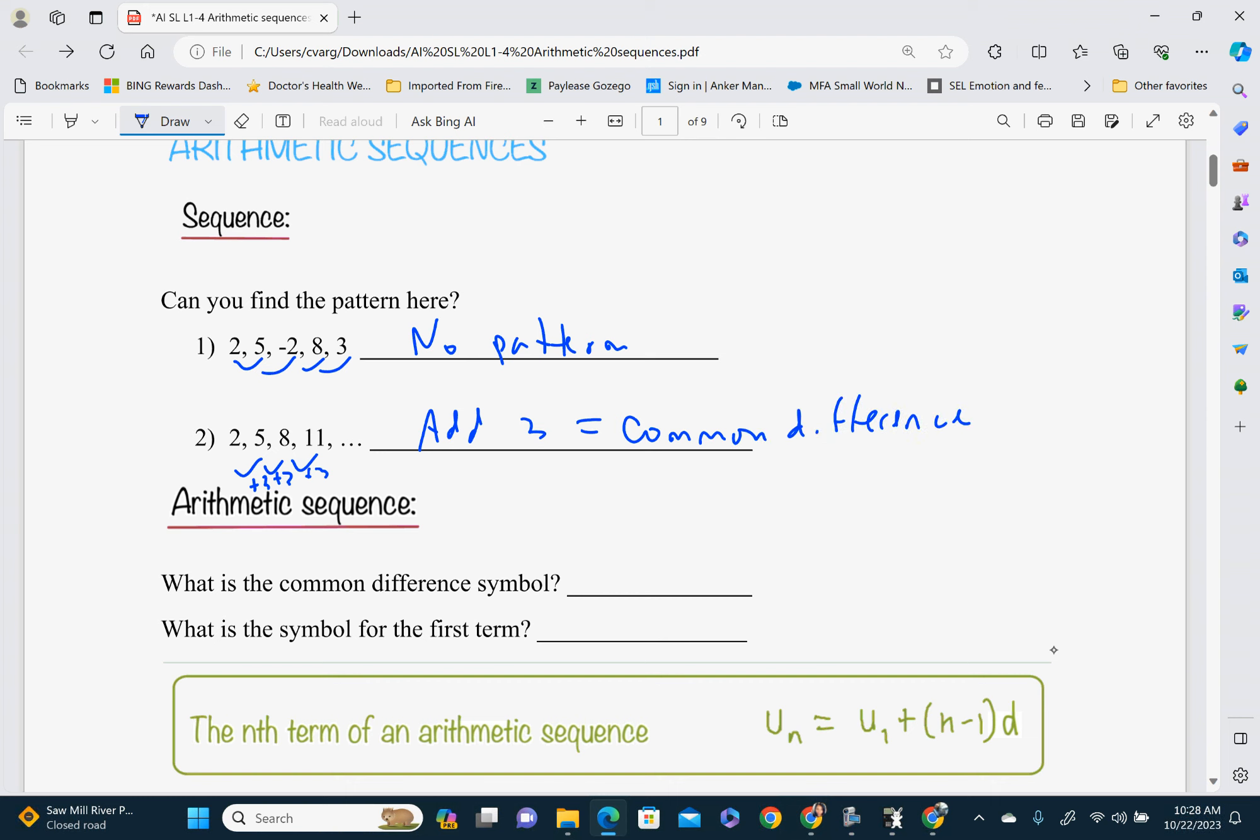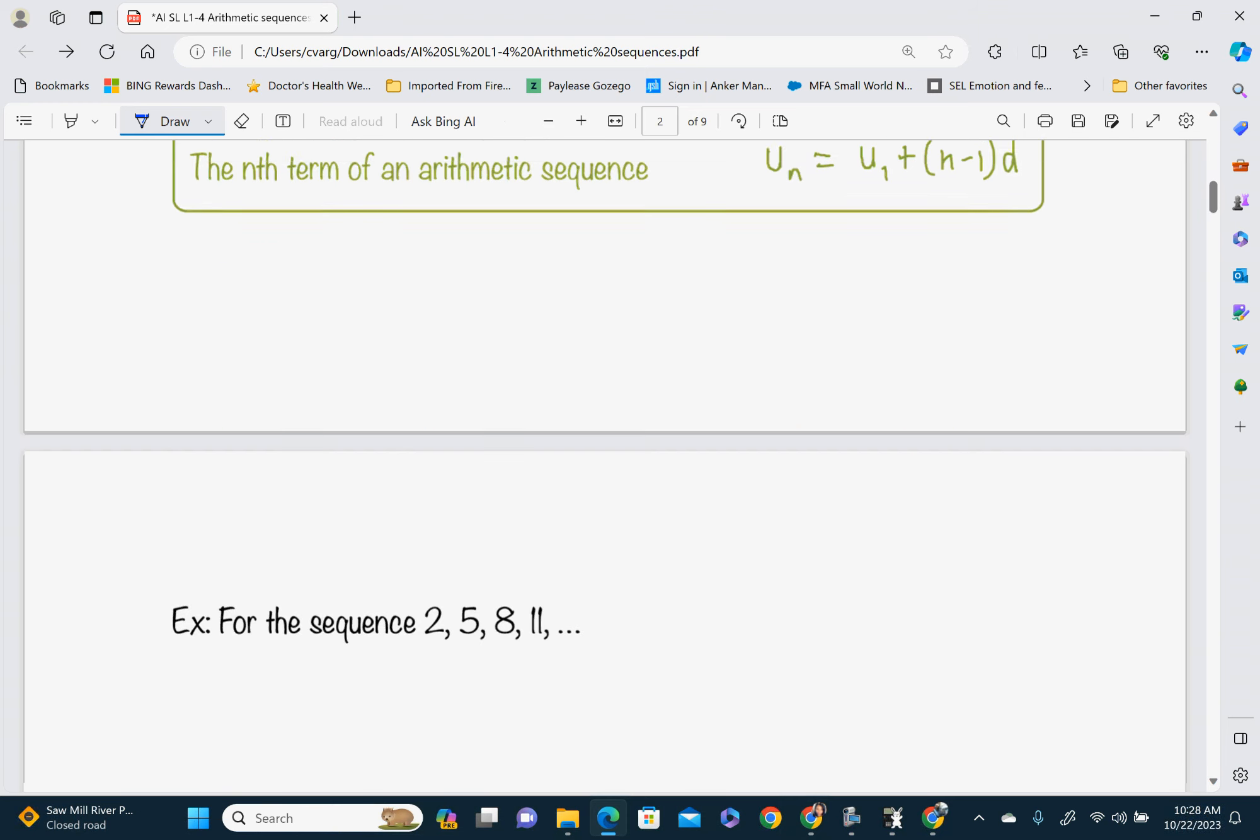And the symbol for that is the letter D, the lowercase letter D. So we're going to put that down here. And the symbol for the first term, in this case, our first term is 2. Symbol for the first term is going to be U1. So that is the symbol right here, and D is what goes here. N is just telling us the nth term. So we're going to do a couple of problems to help you figure out what that means.